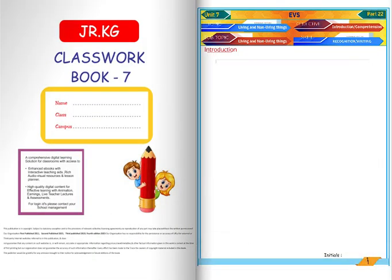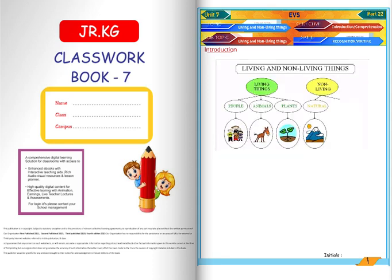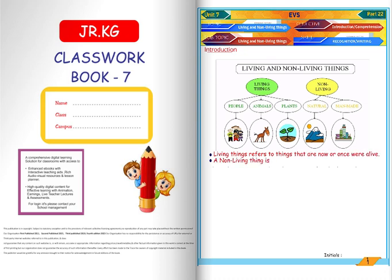Introduction. Living and non-living things. Living things include people, animals, and plants. Non-living things can be natural or man-made. Living things refers to things that are now or once were alive. A non-living thing is anything that was never alive.